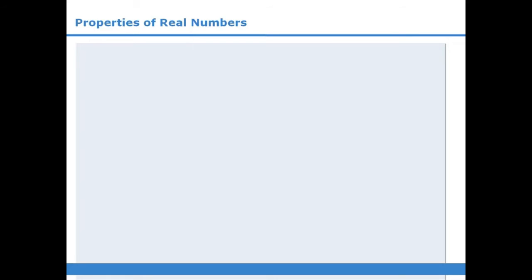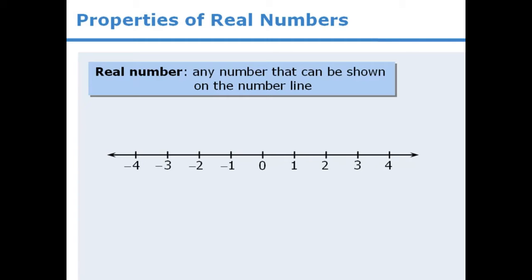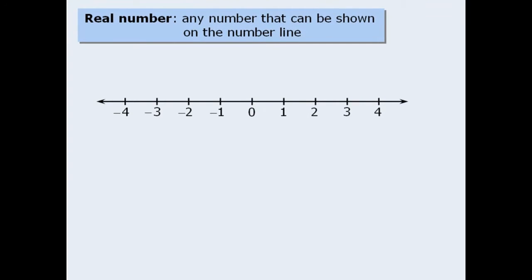In this lesson, we will learn the definition of a real number and we will examine some properties of real numbers. To begin, a real number is any number that can be shown on the number line. The following numbers are examples of real numbers.